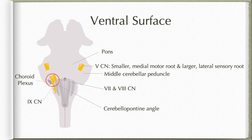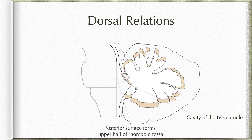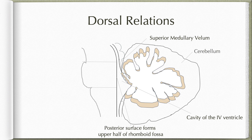Tumors at the cerebellopontine angle have a distinct presentation due to these structures — we shall discuss that at a later stage. Coming to the dorsal relations, immediately posterior to the pons there is the cavity of the fourth ventricle, so that the posterior surface of the pons forms the floor of this cavity. Further dorsally, the superior medullary velum, which is a thin sheet of white matter, forms the roof of the fourth ventricle. This cavity of the fourth ventricle separates the pons from the cerebellum.